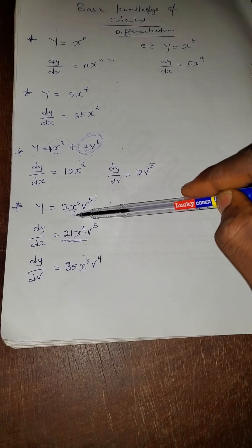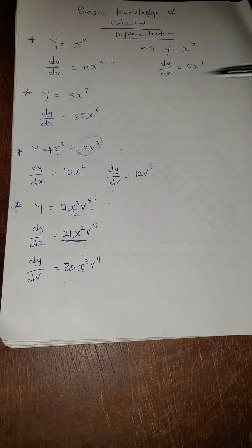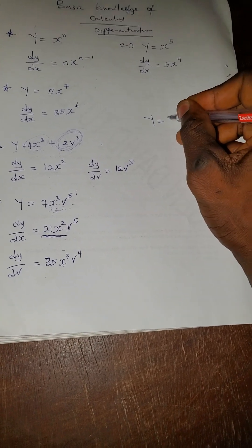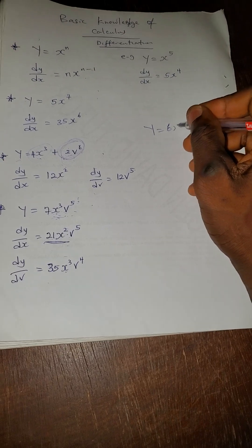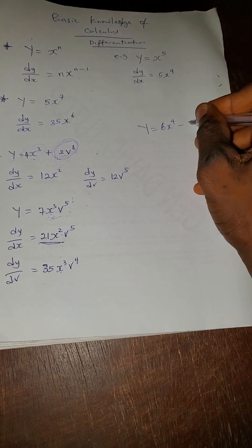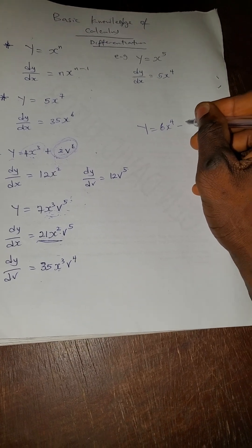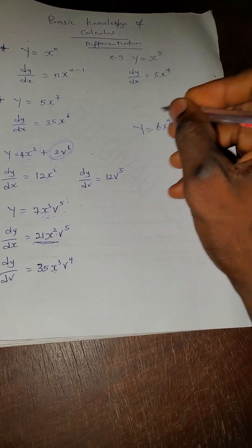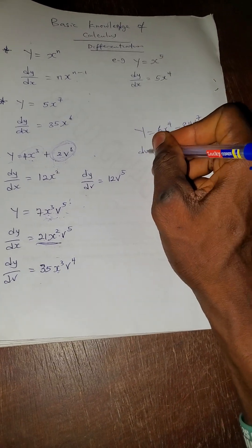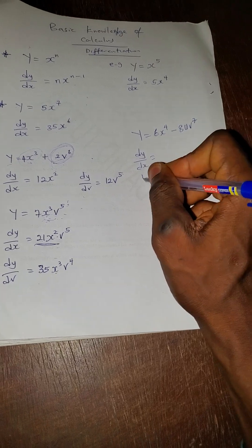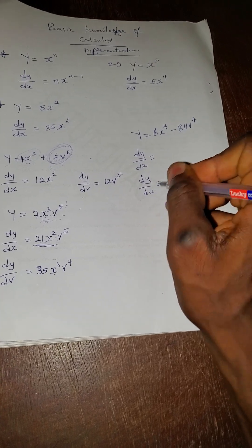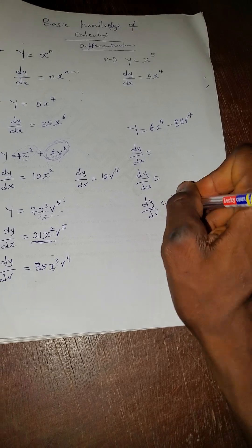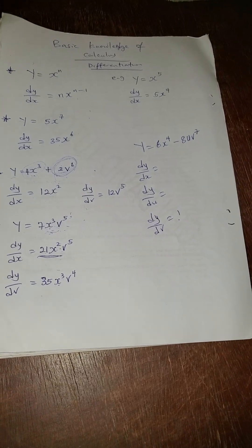Now for the comment section: given y = 6x⁴ − 8uv⁷, find dy/dx, dy/du, and dy/dv. Leave your answers in the comment section. God bless you.